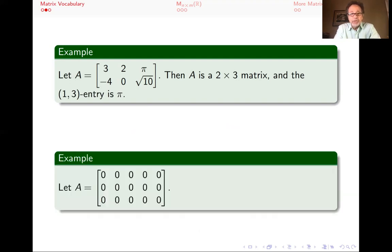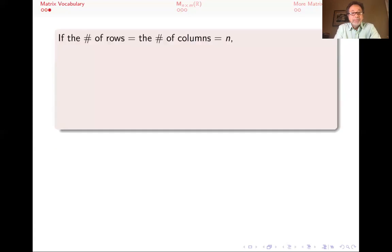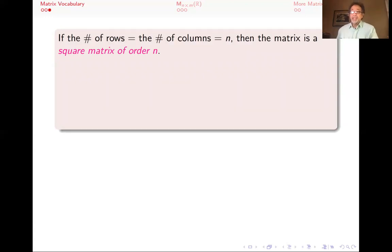Here's another example of a matrix: a three by five matrix where all the entries are zero. When the entries are all zero, we call that the zero matrix. And if the number of rows and columns is the same — let's say that's n — then the matrix is called a square matrix, specifically a square matrix of order n.